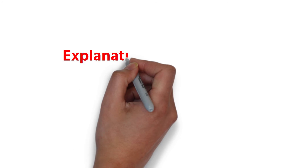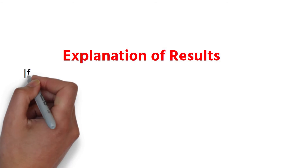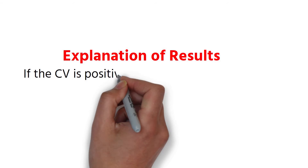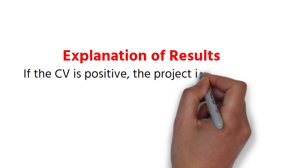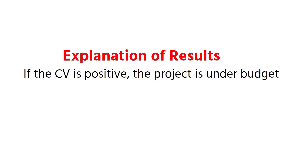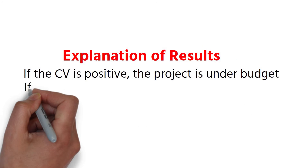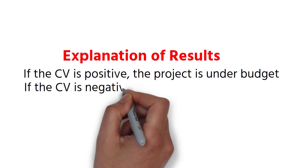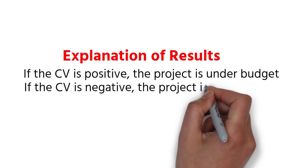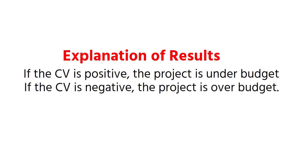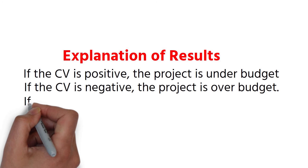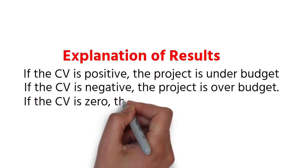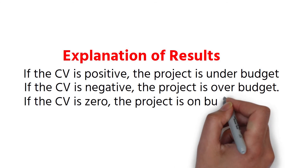Explanation of results. If the CV is positive, the project is under budget. If the CV is negative, the project is over budget. If the CV is zero, the project is on budget.